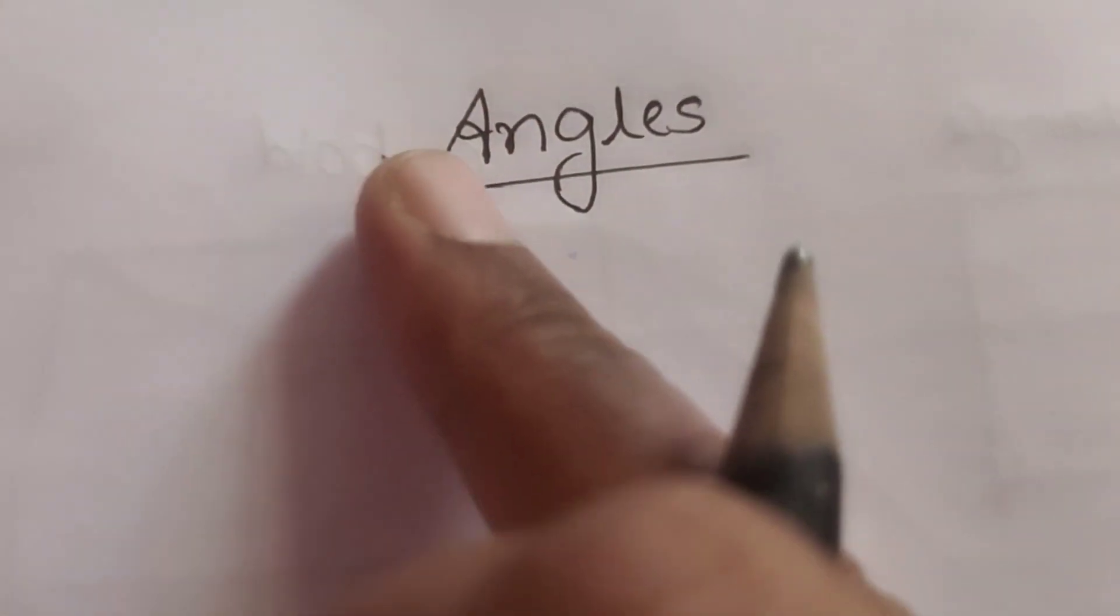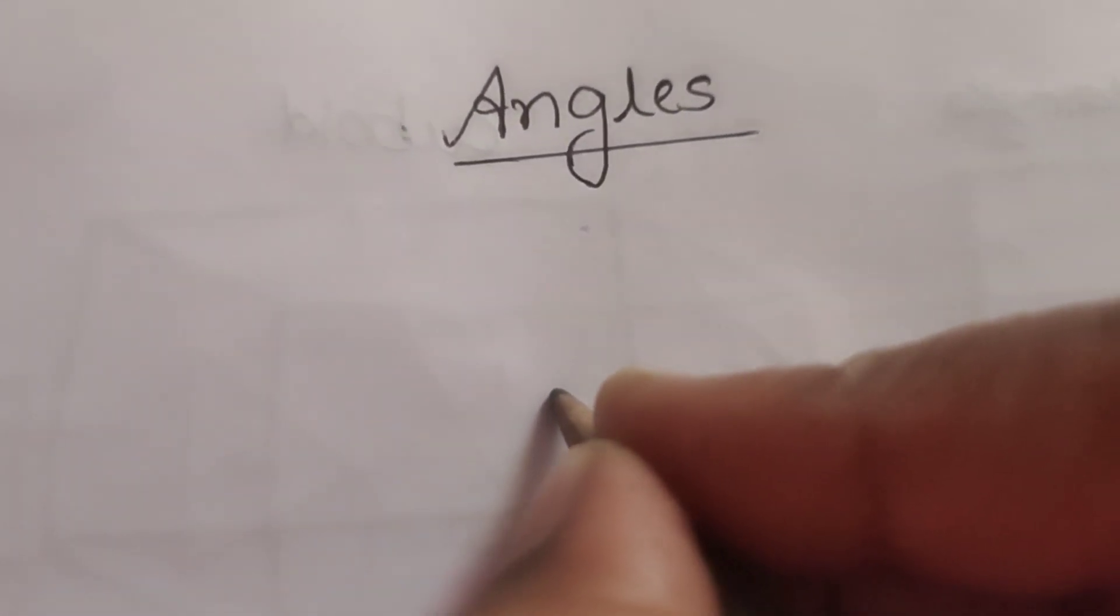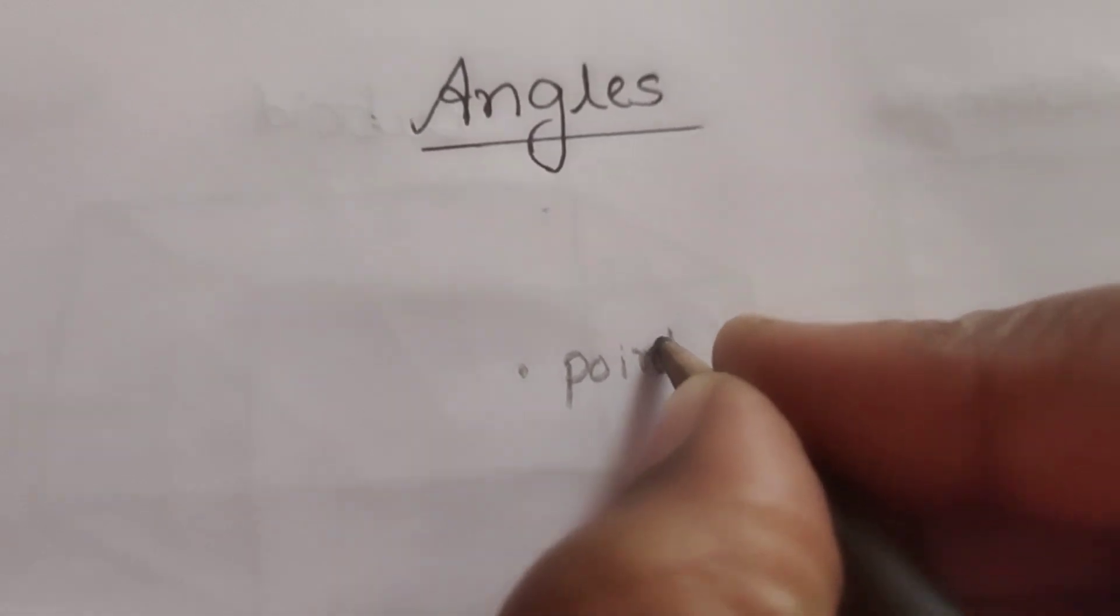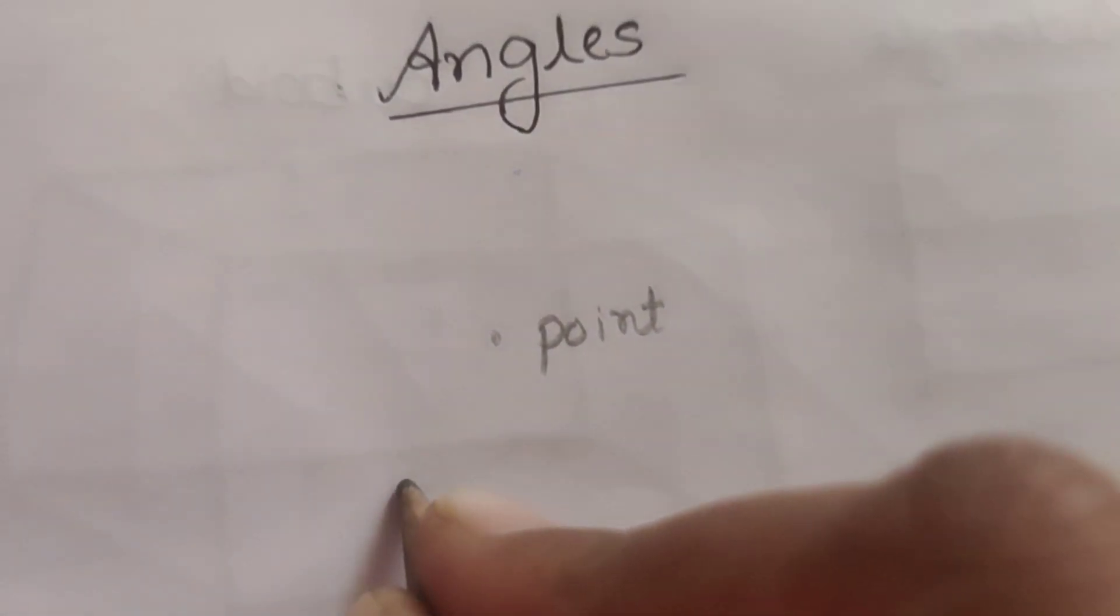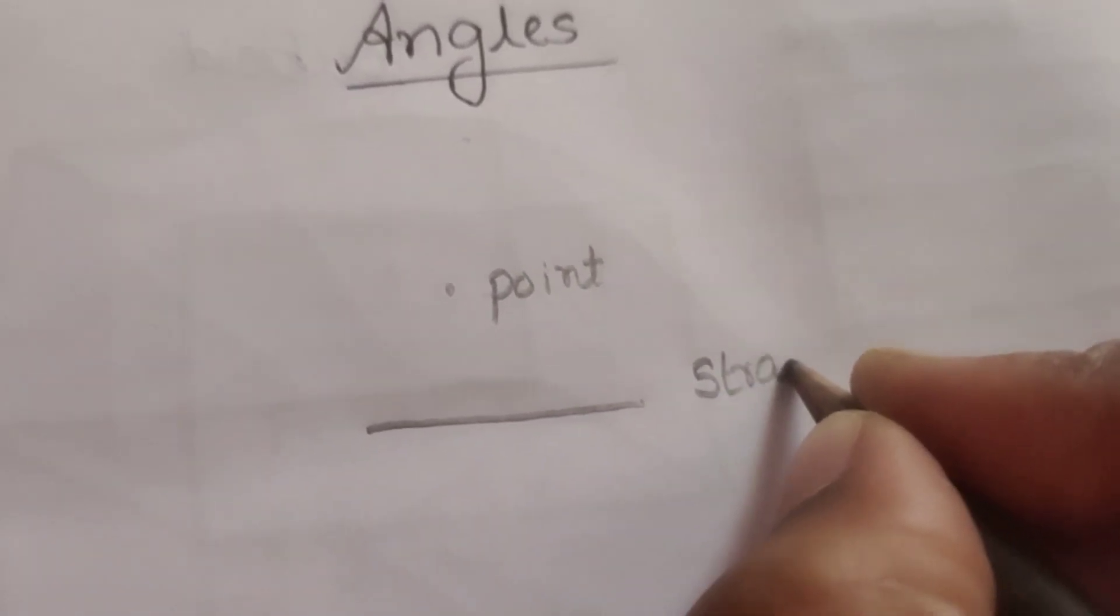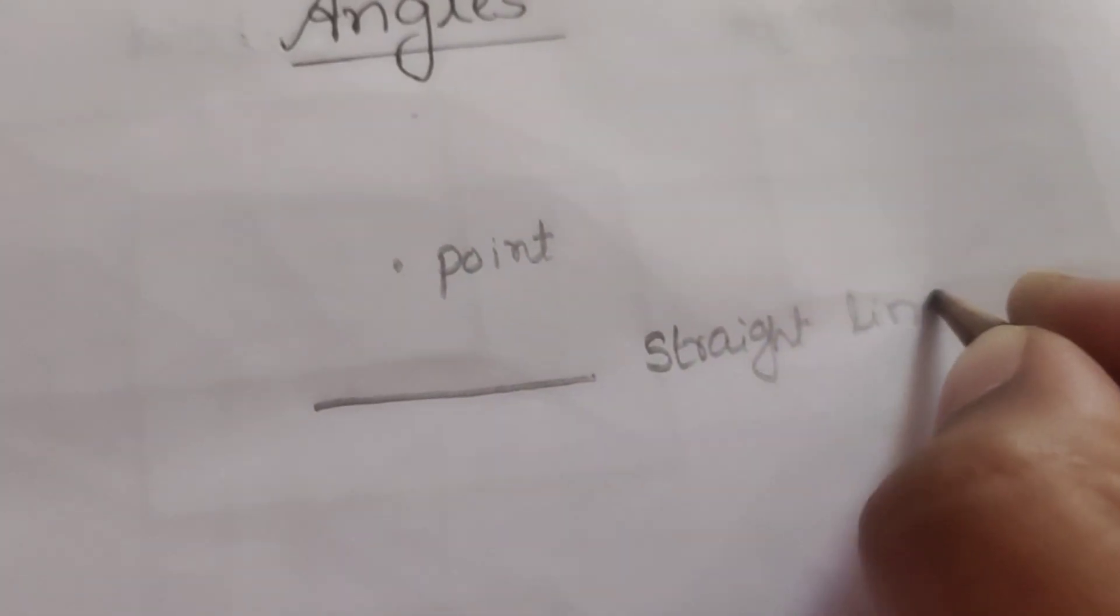Angles. First we will see what is an angle. This is a point. You know this is a point, right? Next, do you know what is a straight line? A line which doesn't have any end. It extends till infinite.